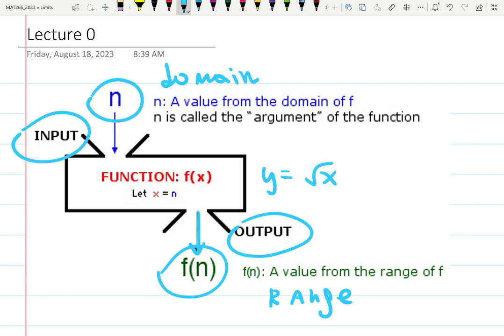That will be important for this class. So input or domain, also called argument. And then the output is range, f of x. And you know this stuff. For example, the input is x equals four, the function is y equals square root of x, the output is y equals square root of four, which is two. Domain, range, input, output. That is one of the things to review.